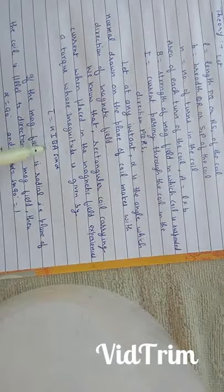I is the current through the coil. B is the magnetic field in which coil is placed. A is the area of each turn of the coil. And alpha is the angle which normal drawn to the plane of the coil makes with direction of magnetic field.